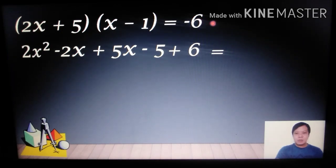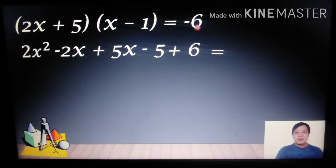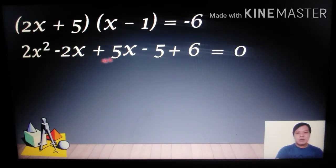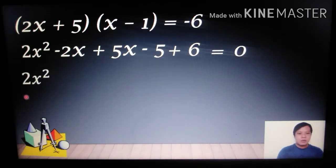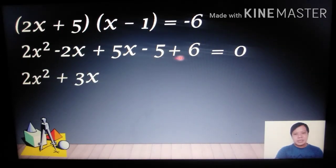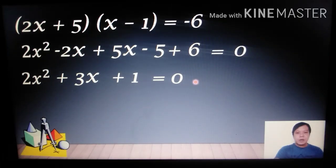Adding +6 to both sides: −6 + 6 = 0 on the right side. On the left we have 2x² − 2x + 5x − 5 + 6 = 0. Combining like terms: −2x + 5x = 3x, and −5 + 6 = 1. This gives 2x² + 3x + 1 = 0.